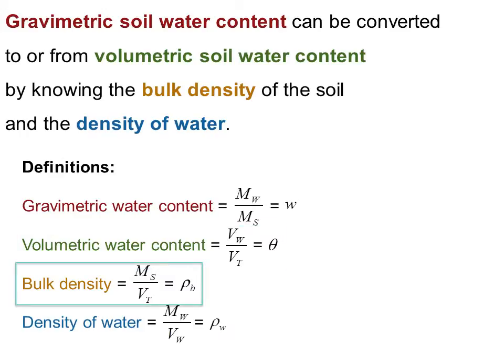Bulk density is the ratio of the mass of soil solids to the total volume of soil, and that is rho B. And the density of water, of course, is just the ratio of mass and volume of water, and that's rho W, and we know this is one gram per centimeter cubed.